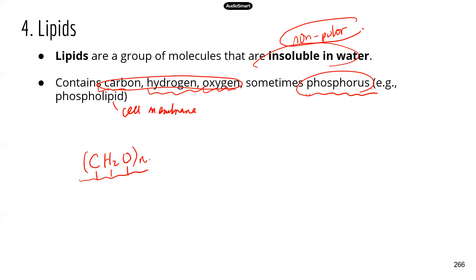If we're trying to figure out what an unknown chemical is and it has phosphorus in the structure, then you immediately know that this unknown chemical is not going to be a carbohydrate, because carbohydrates do not have phosphorus.